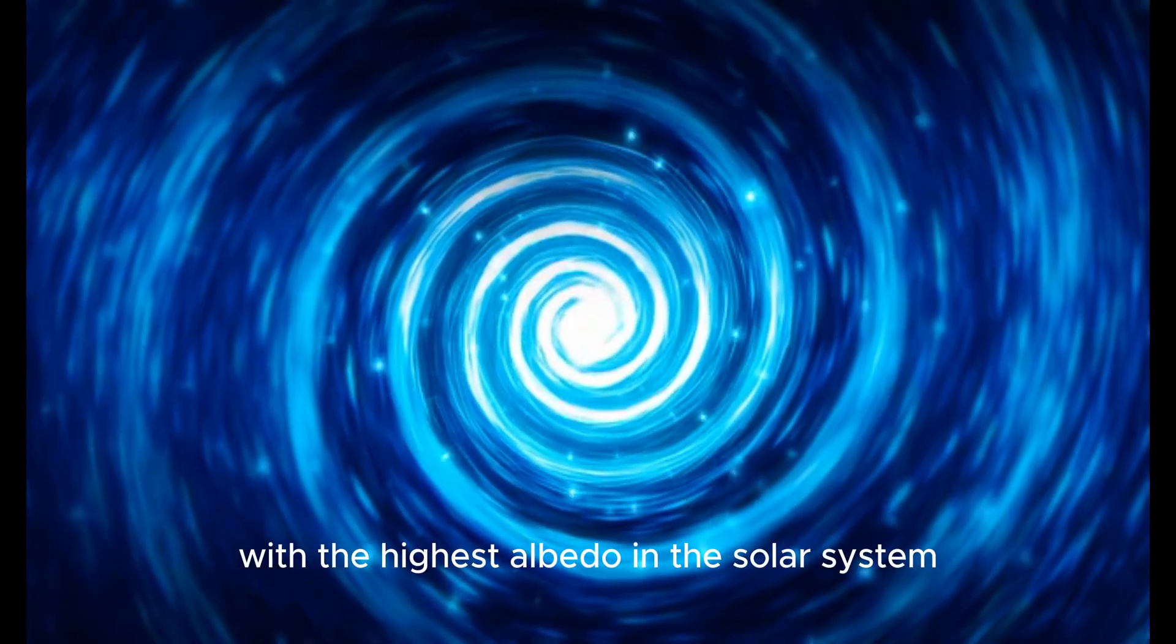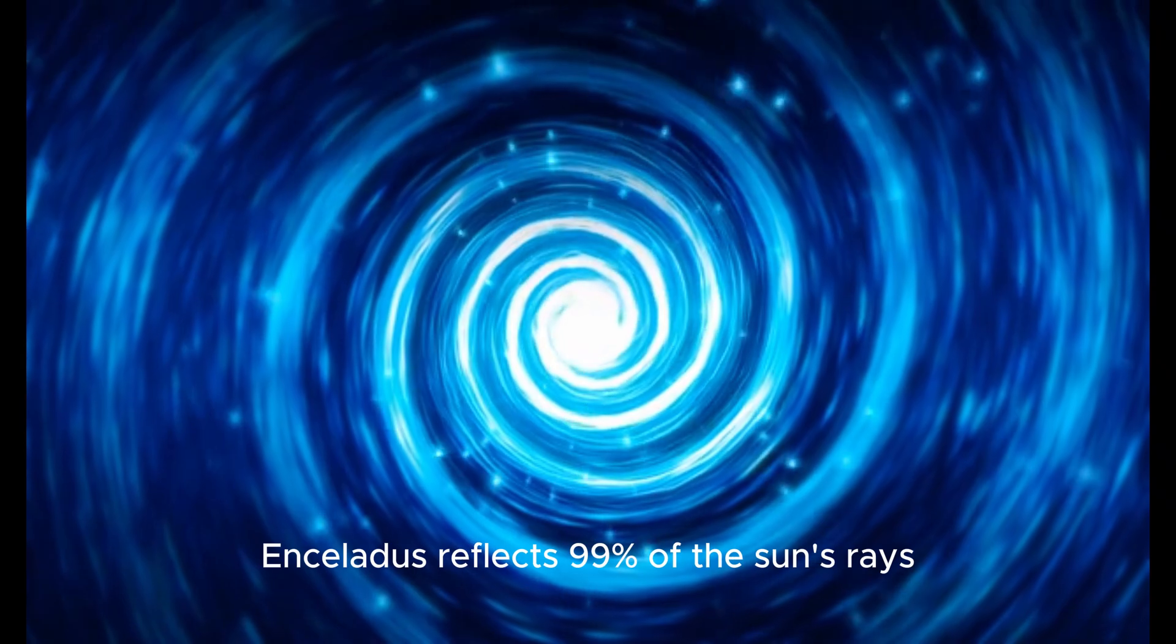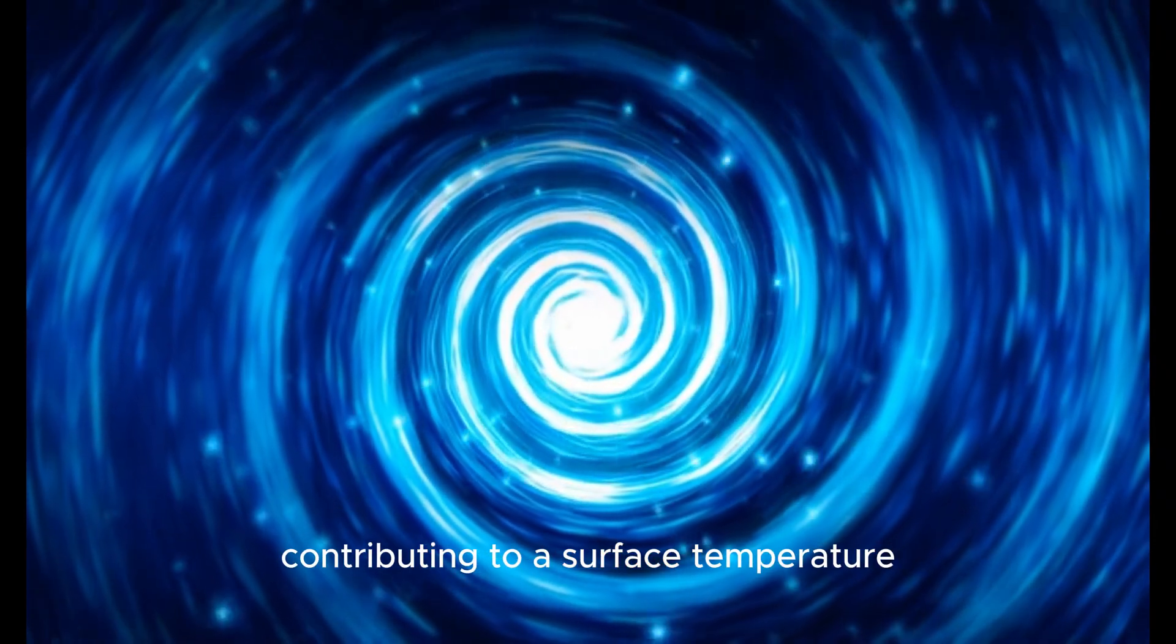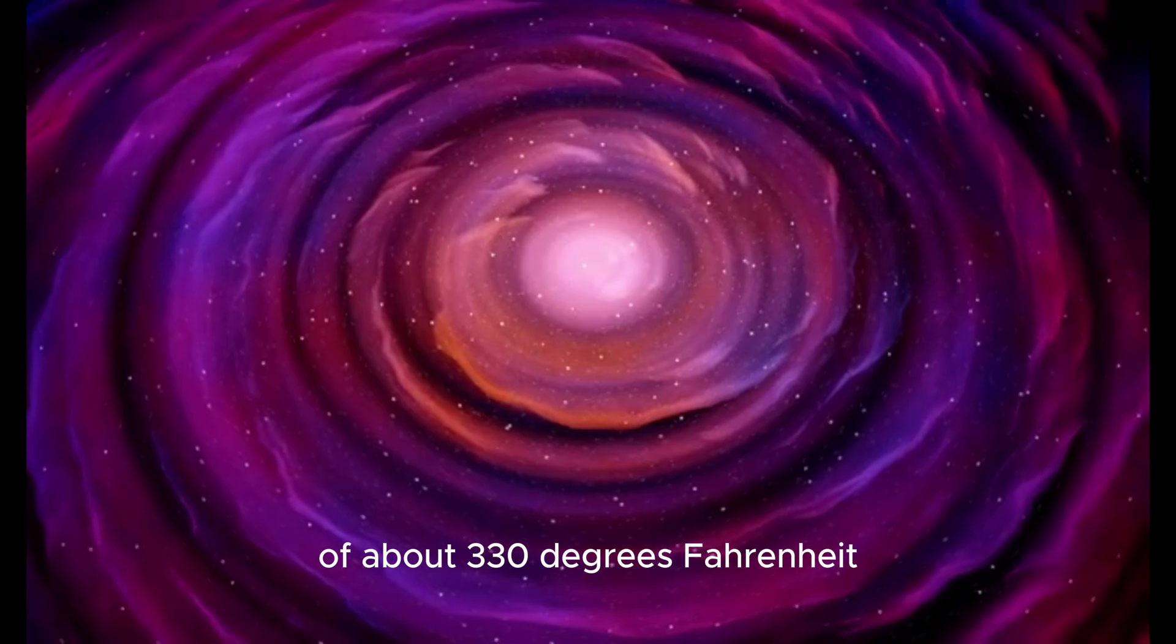With the highest albedo in the solar system, Enceladus reflects 99% of the sun's rays, contributing to a surface temperature of about negative 330 degrees Fahrenheit.